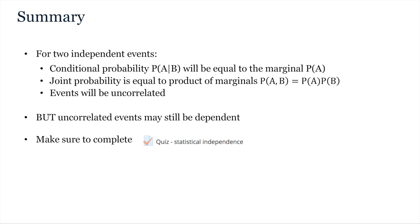Thus in summary for two independent events you will find that the conditional probability will be equal to the marginal and the joint probability will be equal to the product of the marginals. These events will be uncorrelated. However don't fall into the trap of thinking that all uncorrelated events are independent. There may still be higher order interactions. This completes our lecture summarizing statistical independence. Please make sure that you have completed the Keats quiz before moving on.